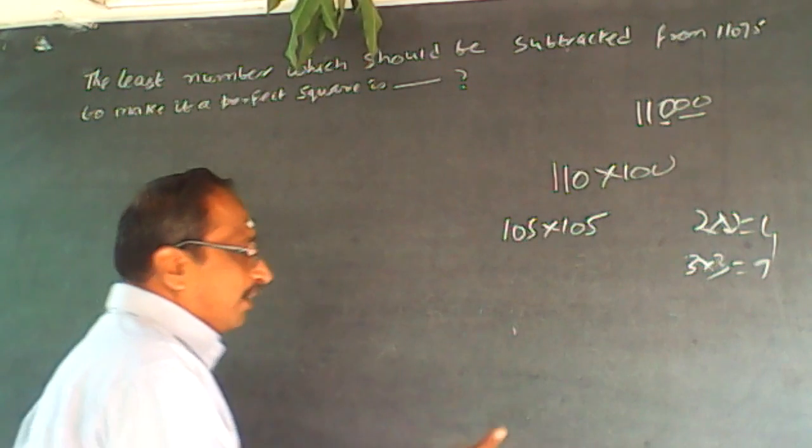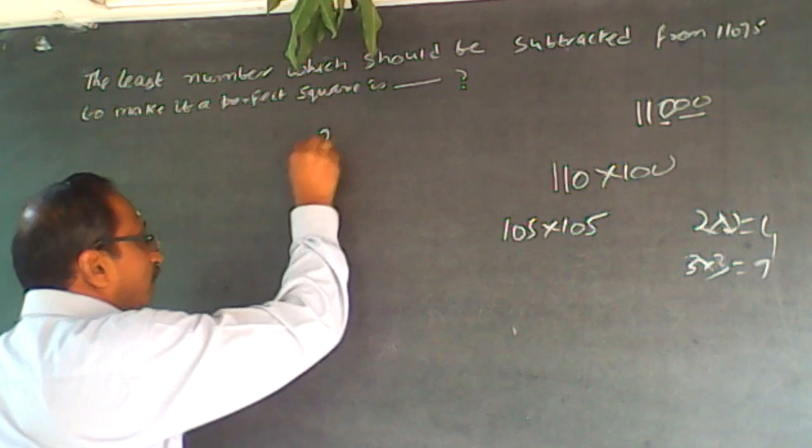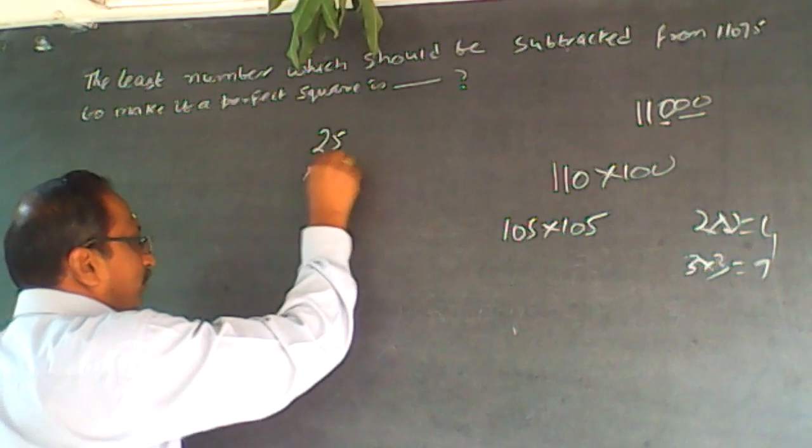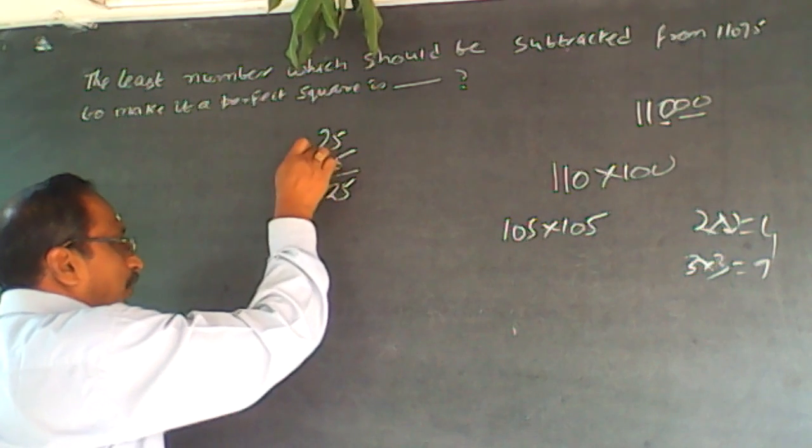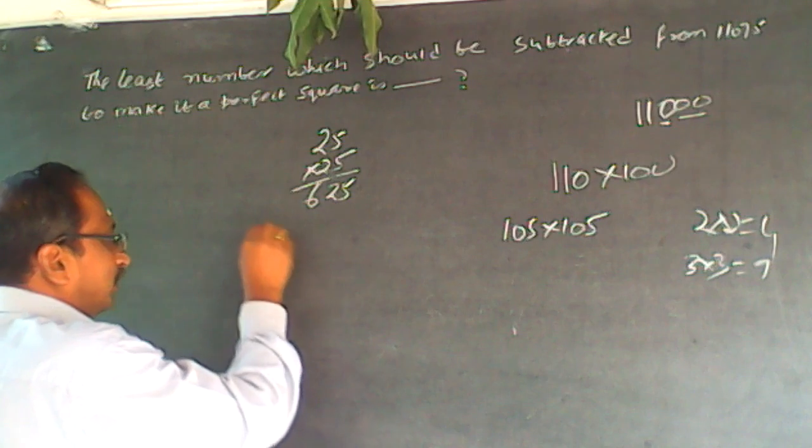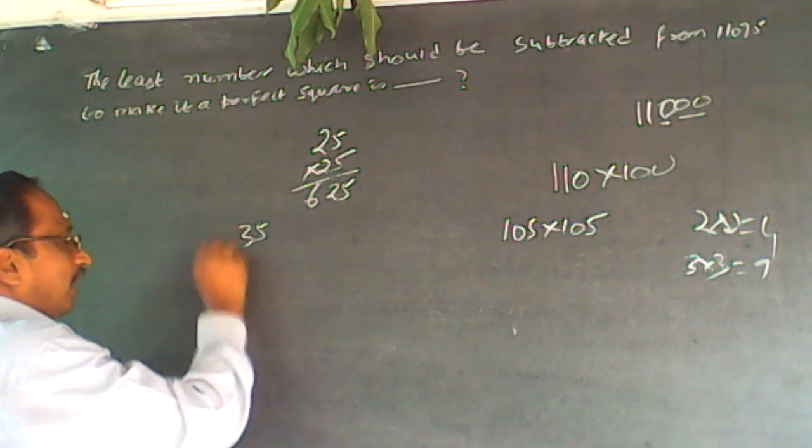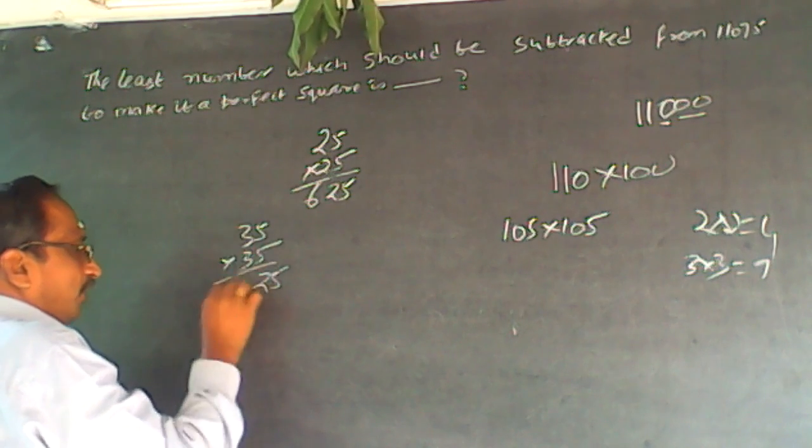See the rule of 5: whenever you multiply a 2-digit number by 5, see 25 into 25. So this is 5 into 5 is 25. The next number will be 3, 2 into 3 will be 6. Any number ending with 5 - suppose it is 35 times 35. 5 times 5 is 25. The next number is 4 and 3 into 4 will be 12.